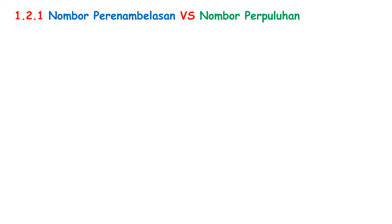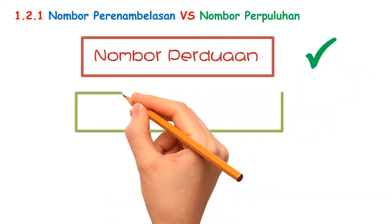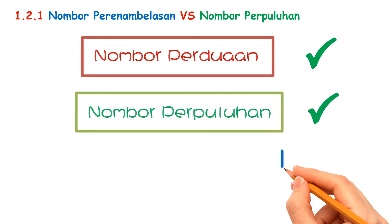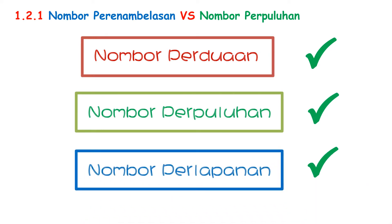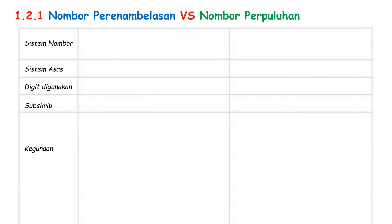Nombor Perenamblasan versus Nombor Perpuluhan. Before that, what are the System Nombor you had learned? In Form 1, Chapter 2.1, we have learned System Nombor Perduaan and System Nombor Perpuluhan. And in Form 2, Chapter 1.1, we have learned System Nombor Perlapanan. And now, we will learn a new System Nombor, which is Nombor Perenamblasan.